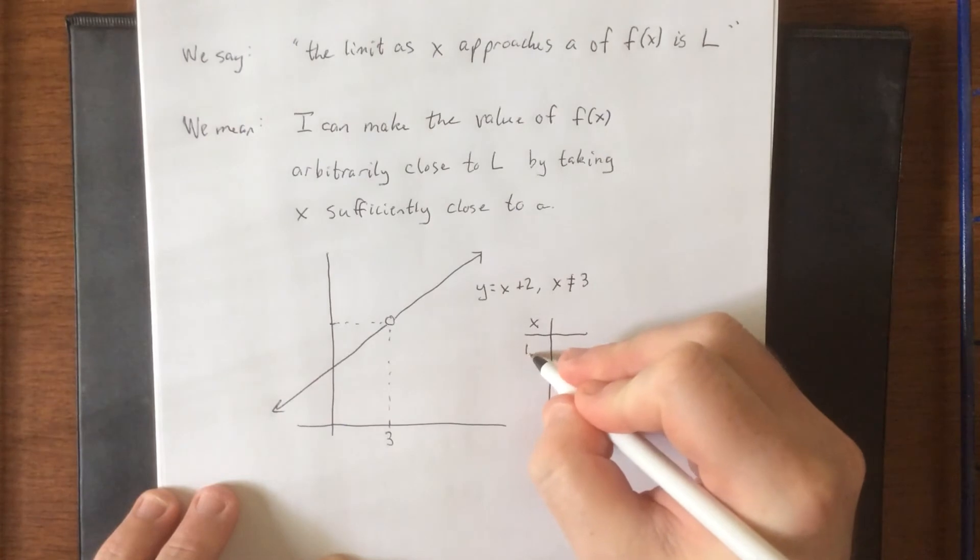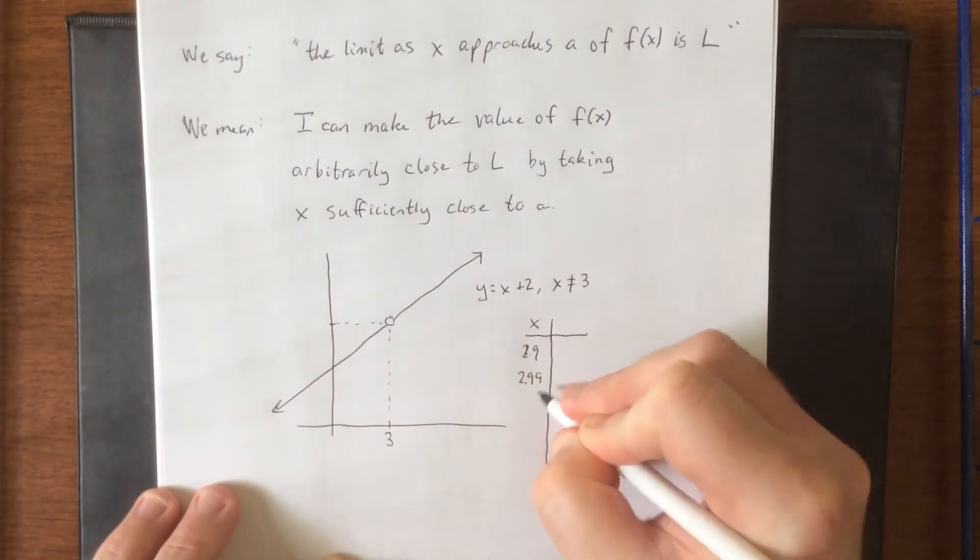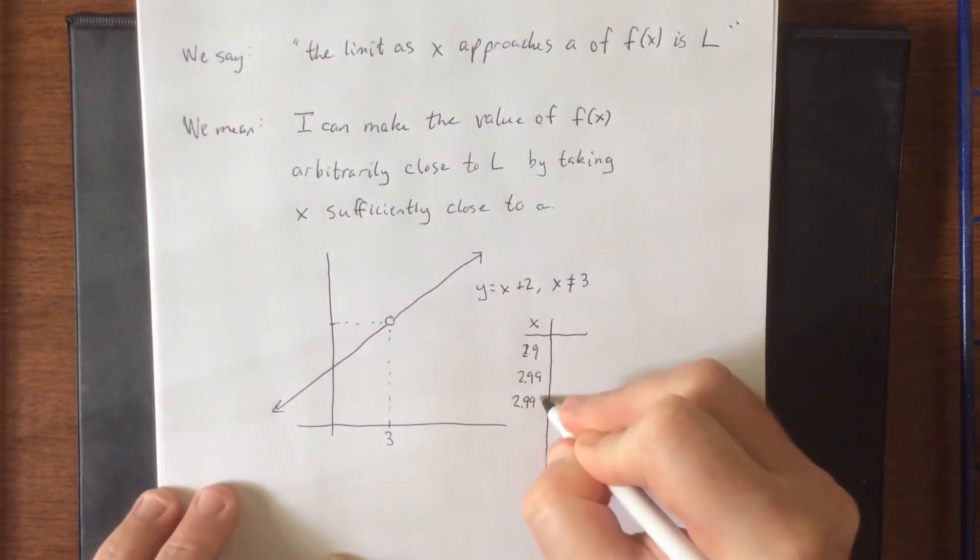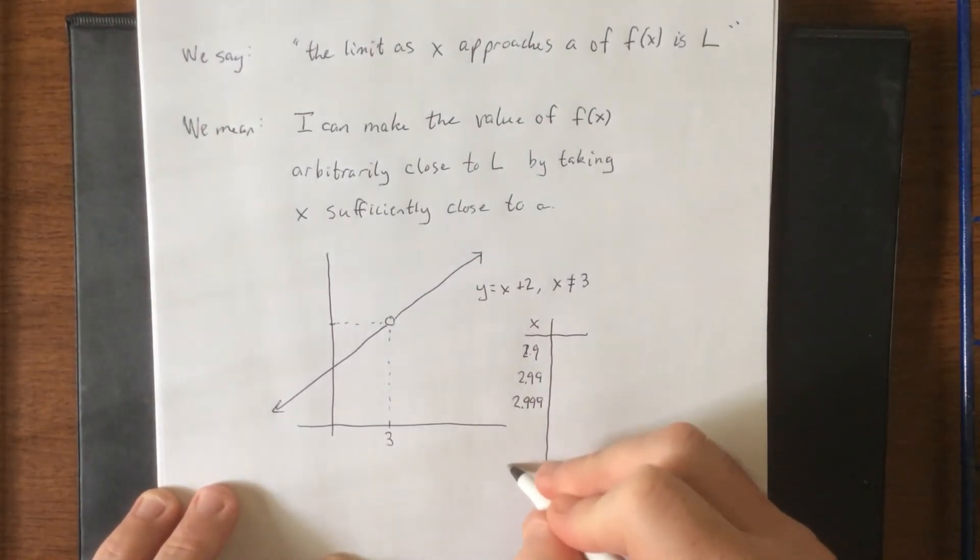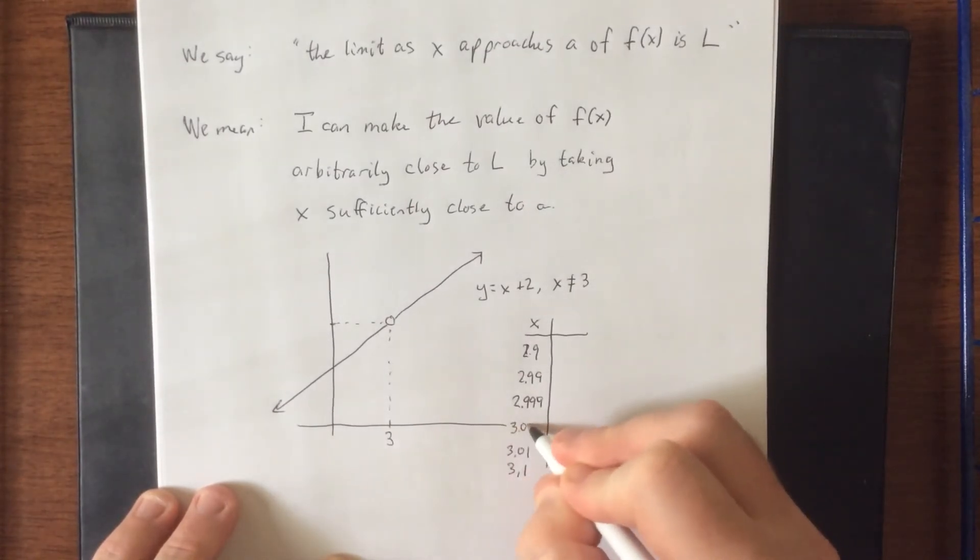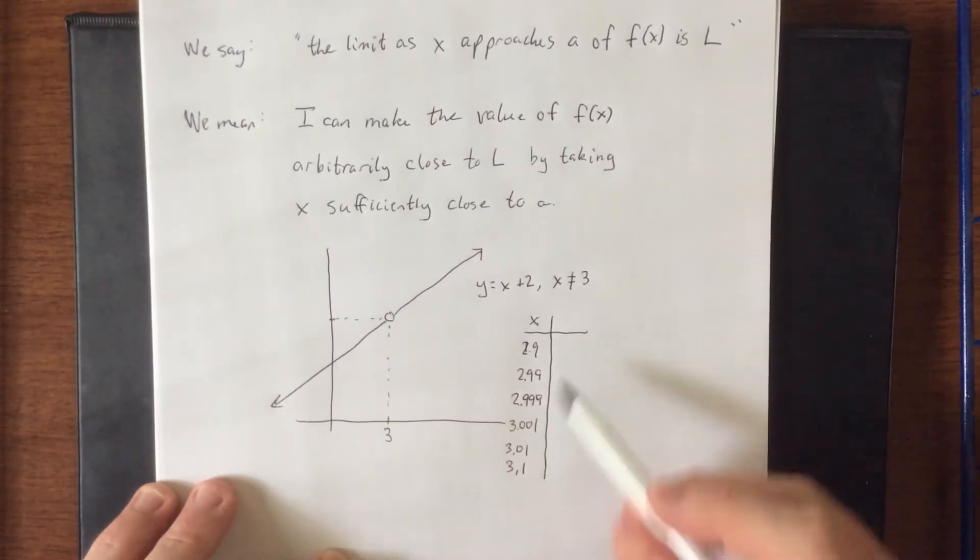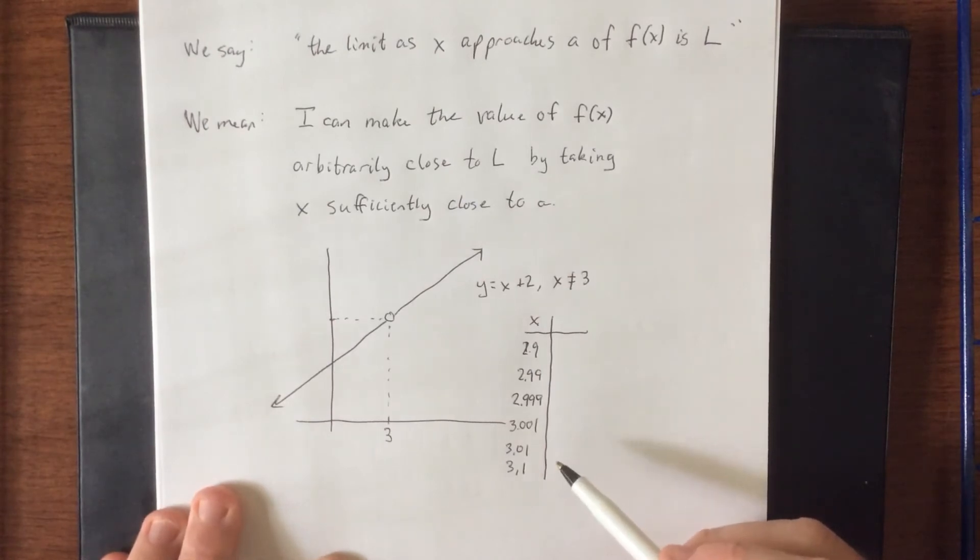So I could plug in values like 2.9 or 2.99 or 2.999 or 3.1, 3.01, 3.001. Hopefully this is starting to look familiar from what we did in the previous section.